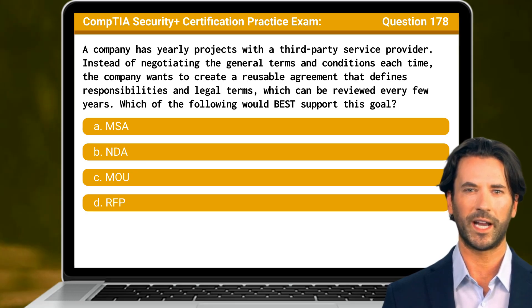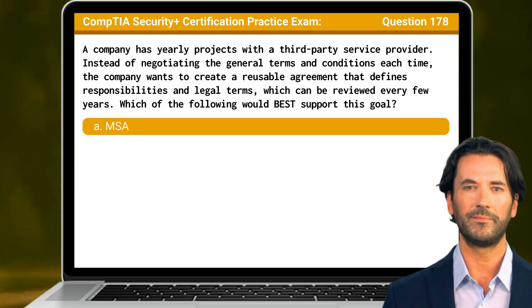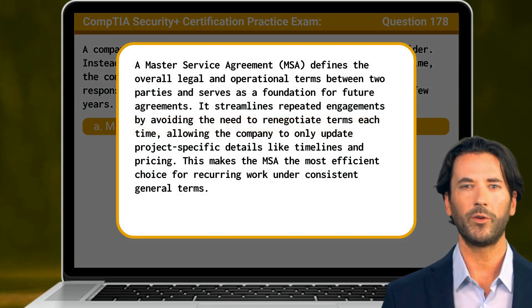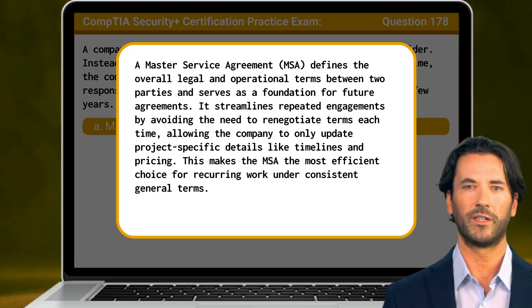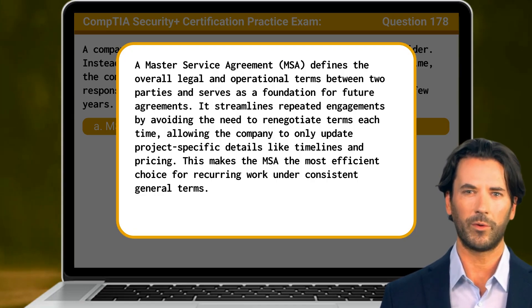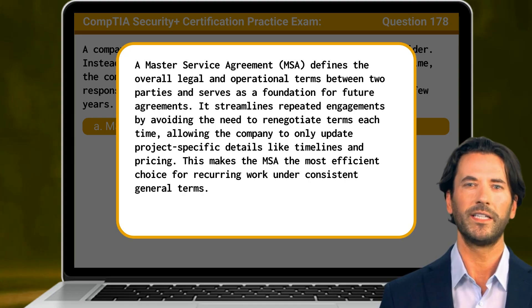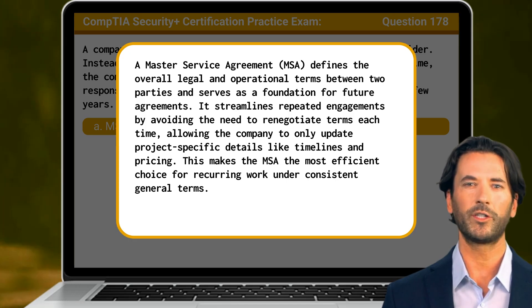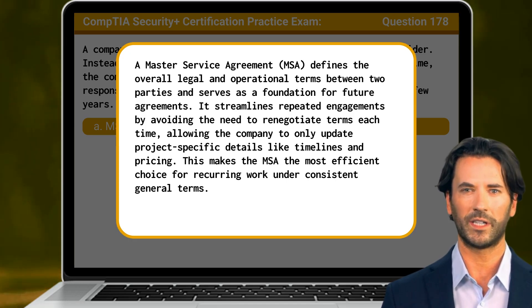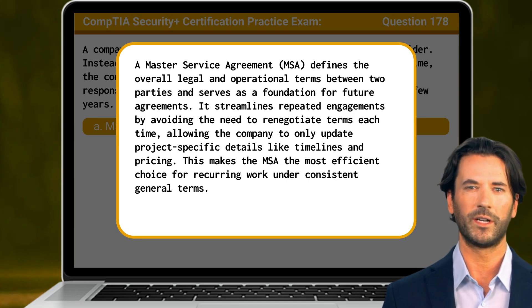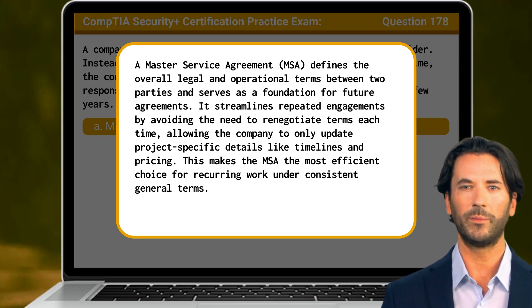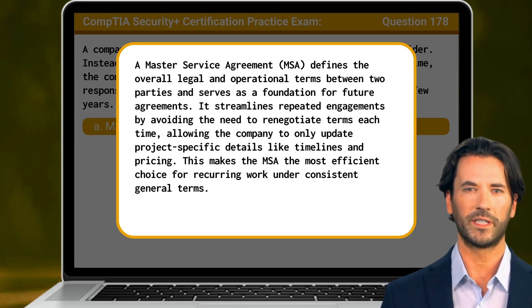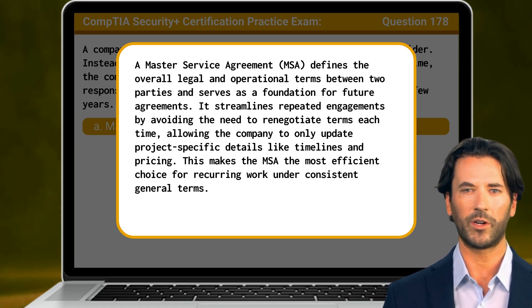The answer is A. MSA. A Master Service Agreement, or MSA, defines the overall legal and operational terms between two parties and serves as a foundation for future agreements. It streamlines repeated engagements by avoiding the need to renegotiate terms each time, allowing the company to only update project-specific details like timelines and pricing. This makes the MSA the most efficient choice for recurring work under consistent general terms.